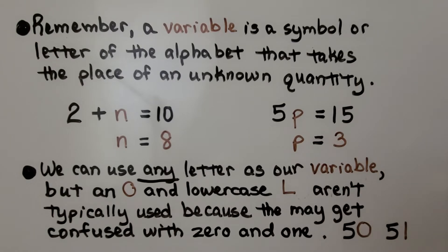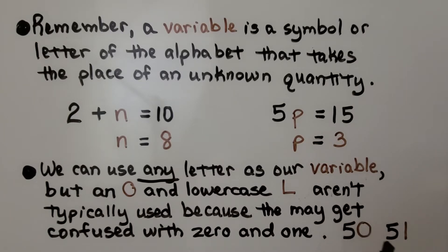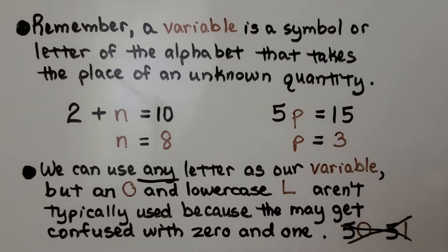But o and a lowercase l aren't typically used because they may get confused with 0 and 1. If we saw 5o, it might look like a 50. And if we saw 5 lowercase l, it might look like 51. So we don't use these because they'll get confused.